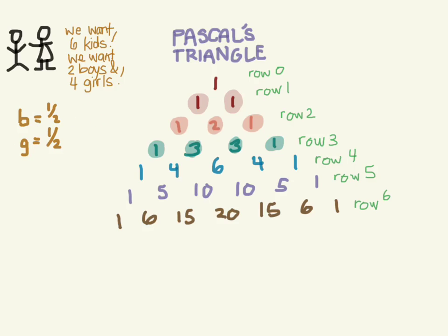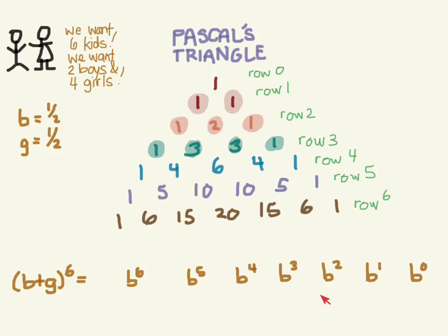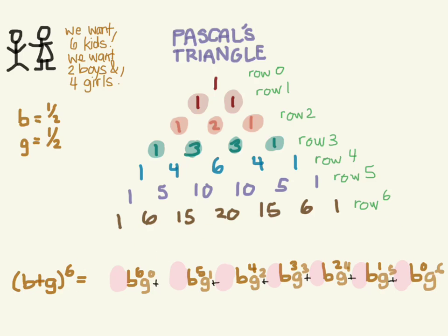Let's use our binomial theorem. We have boy and girl, and they want six kids, so we expand (boy + girl)⁶. The options for boys go from six down to zero, and girls from zero up to six. The coefficients come from row six of Pascal's triangle. For two boys and four girls, we use the corresponding term: 15 × (1/2)² × (1/2)⁴ = 15/64.